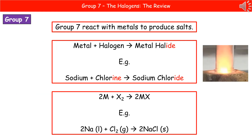When group 7 reacts with metals, they produce a salt. A common reaction is sodium plus chlorine making sodium chloride — table salt. The key thing is the endings: a halogen on its own ends in -ine, and the halogen joined to a metal ends in -ide, making a metal halide. So sodium plus chlorine (-ine) makes sodium chloride (-ide). Don't write 'sodium chlorine' — you will not get the marks.